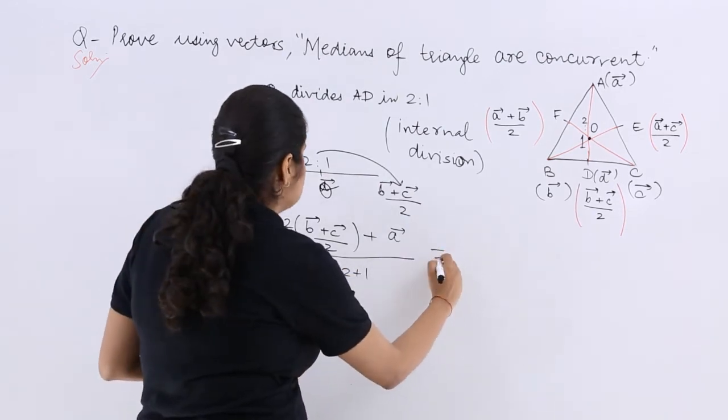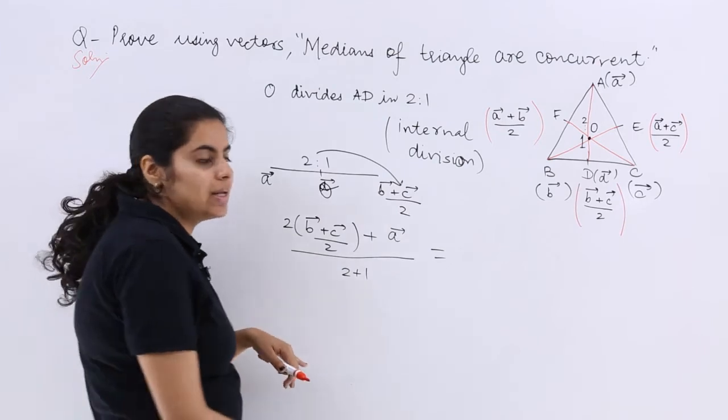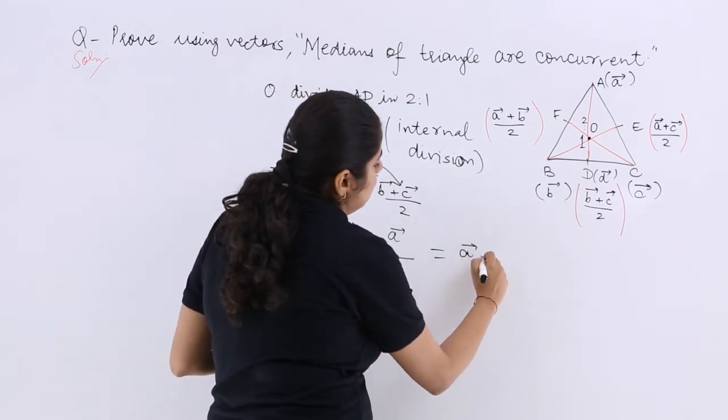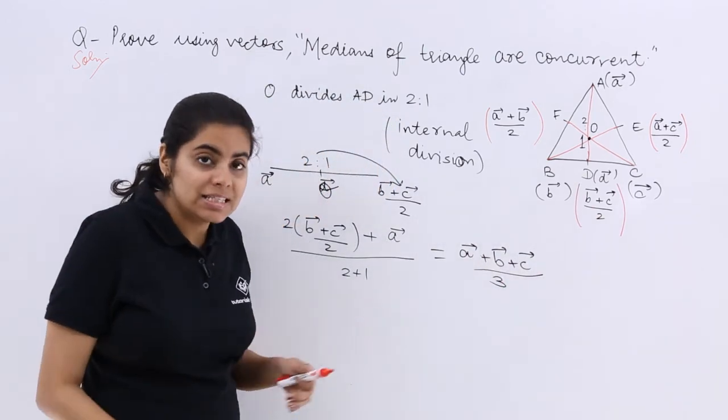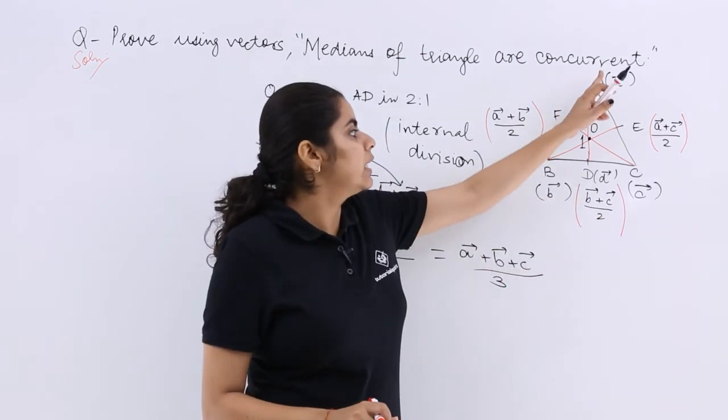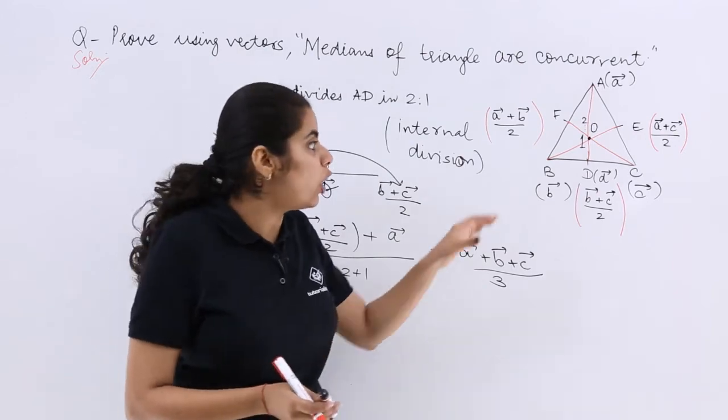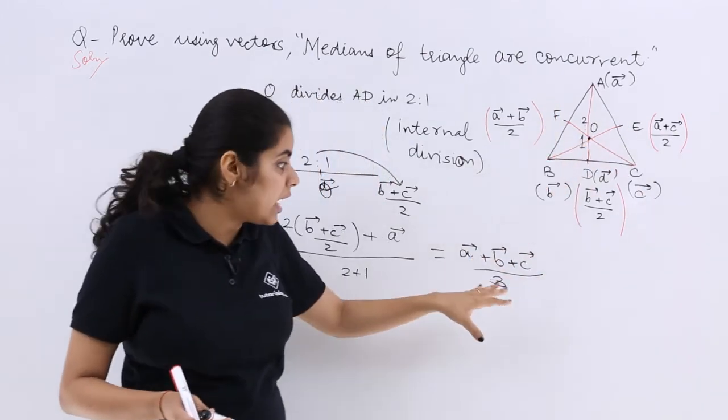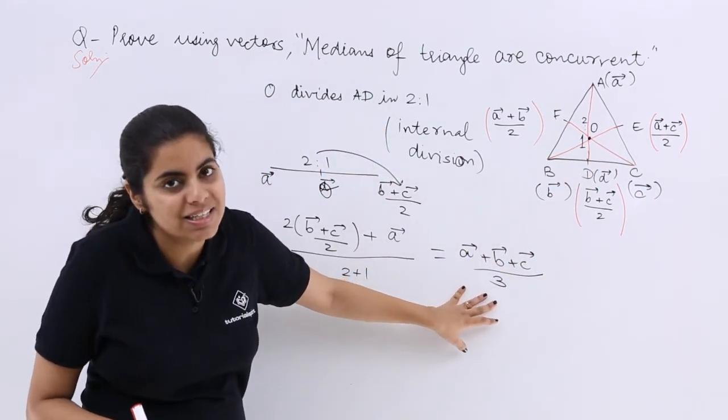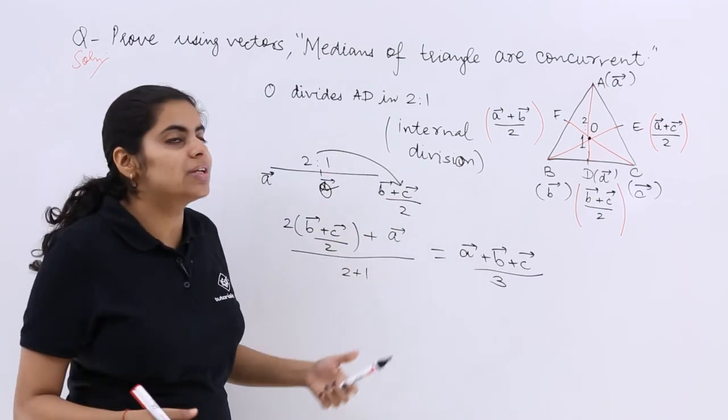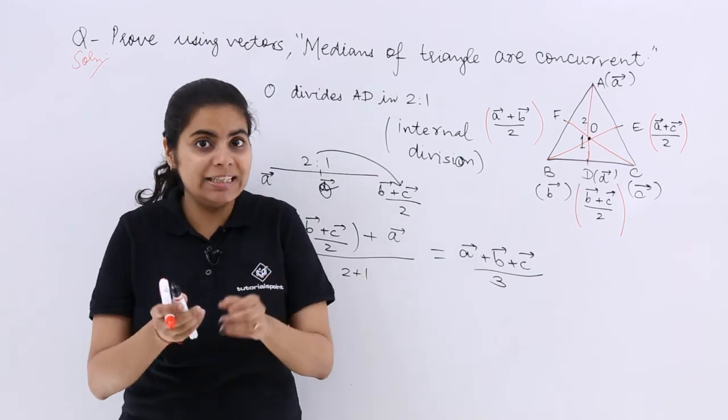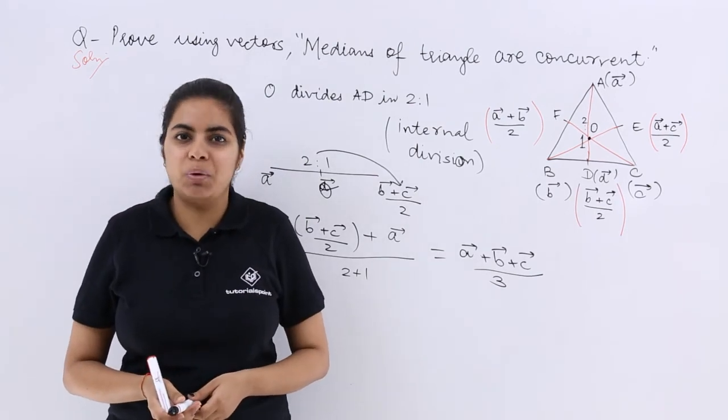Now the answer will be nothing but A plus B plus C upon 3. And similarly, when you talked with regard to AD, you can also talk with regard to BE and CF and you will get the same answers. So that proves the concurrency with respect to medians, with respect to your internal division in case of section formula.